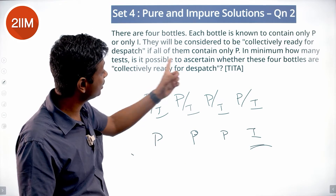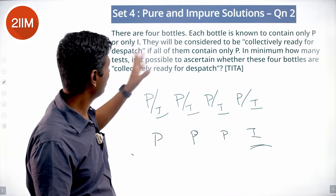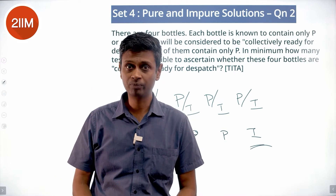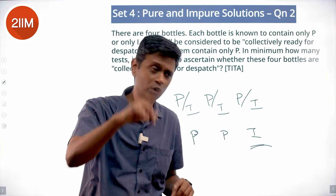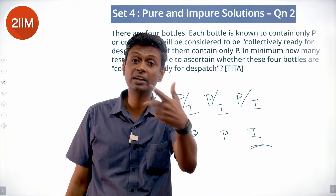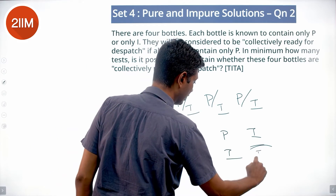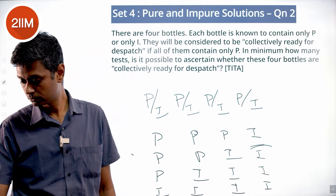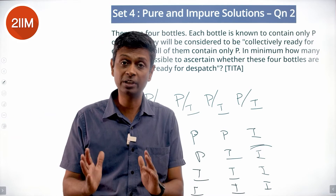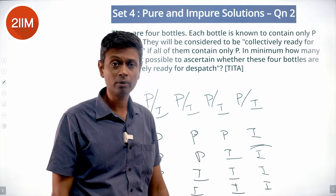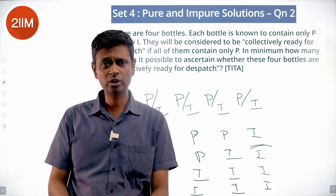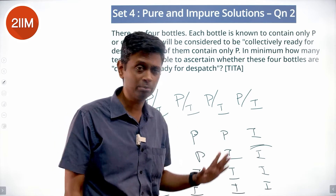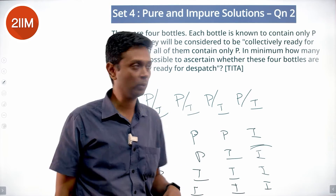If we mix everything in equal quantities — all four together — even in that mixture there will be 25% impurity, which will be detected. So, collect equal quantities from all four, put them in one container, and test. If impurity is detected, at least one bottle is impure. Even if there is just one impure bottle, that gives 25% impurity in the mixture, which will be detected. P P P I, P P I I, P I I I — all get detected. In one test we can find the answer.